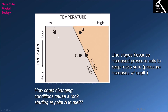What happens if we keep the temperature constant but increase the pressure? Well, if we increase the pressure on A and keep the temperature constant, A is just going to move straight down and remain in the solid field. So when it comes to point A, the only thing we can do to make the rock melt is exclusively increase the temperature — make the rock hotter and eventually you will hit the solidus.